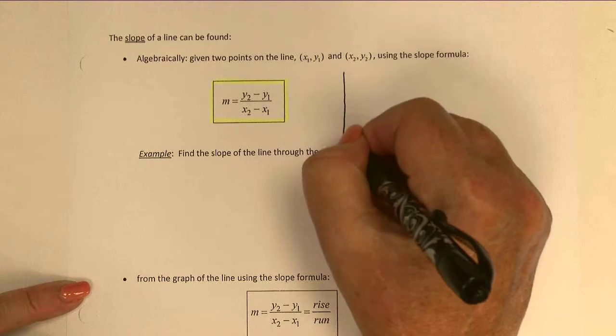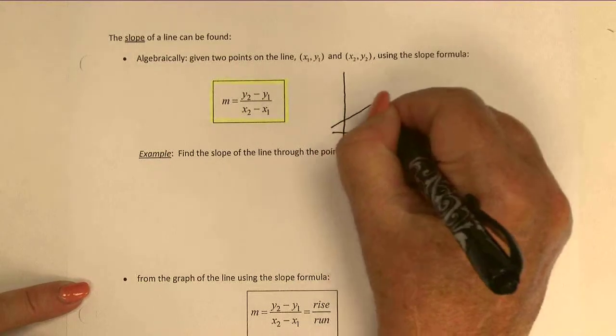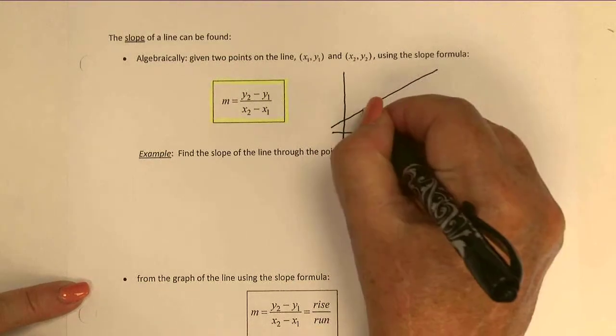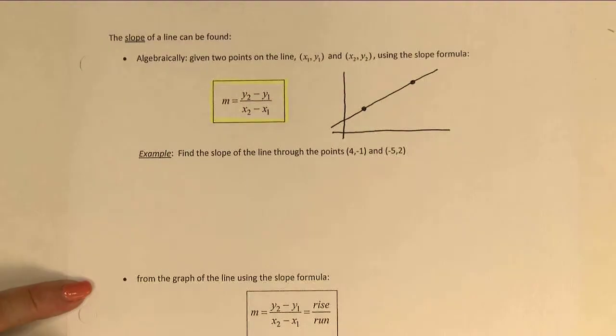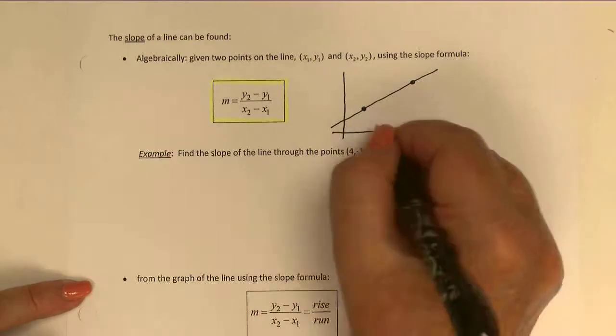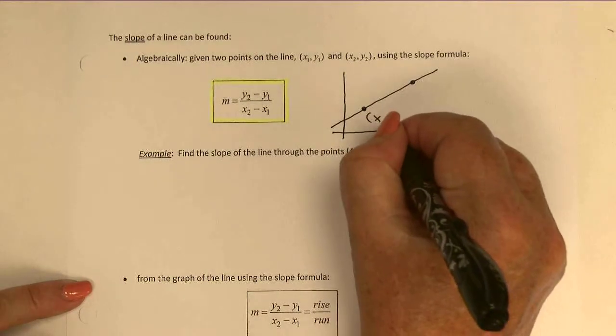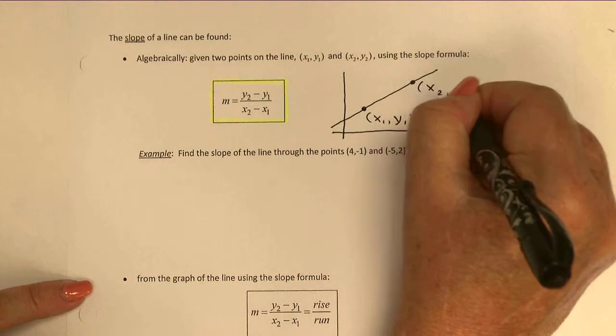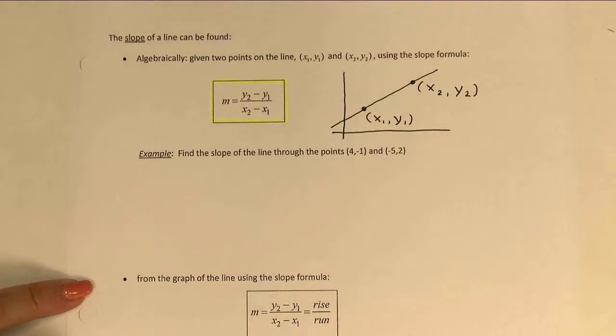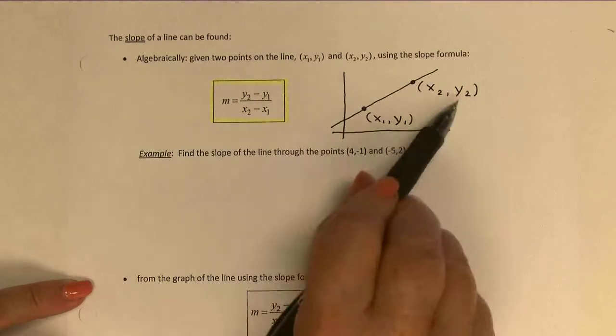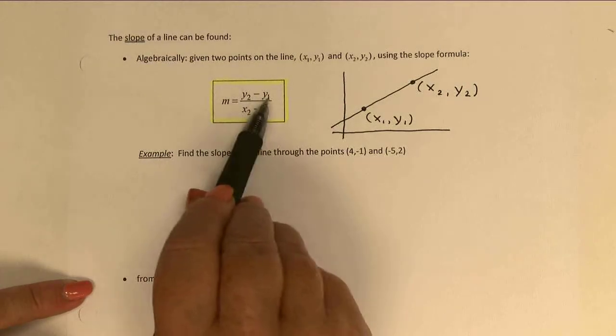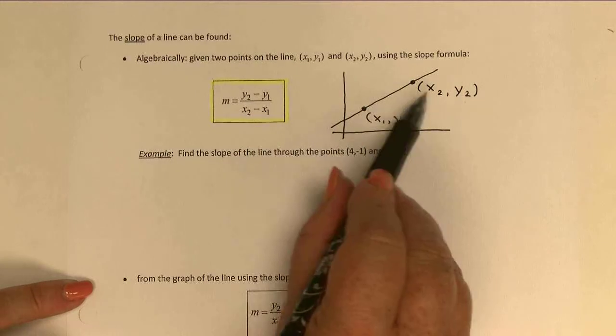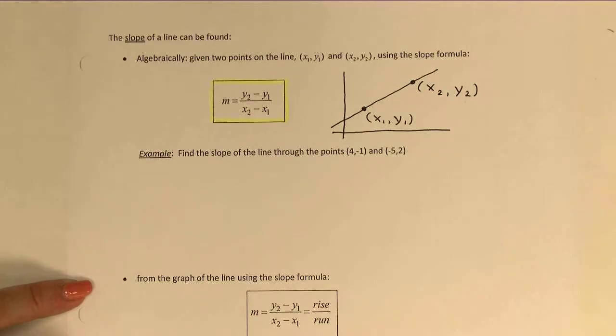If we imagine for a moment how that would look on a graph, if I have two points on my graph, and I can arbitrarily choose which one to call (x₁, y₁), I'm going to pick this one right here, and then we'll call the other one (x₂, y₂). I can then plug those values in, and I can subtract the y values for the numerator, and for the denominator, I simply subtract the x values. Let's go ahead and try that out in this next example.